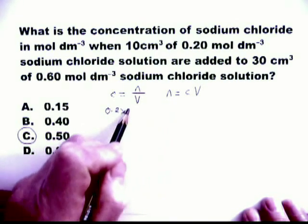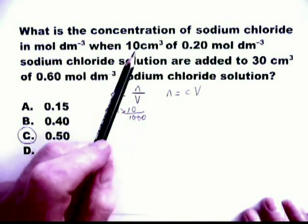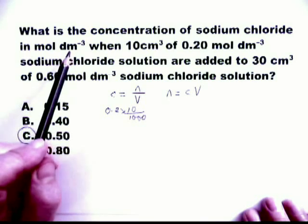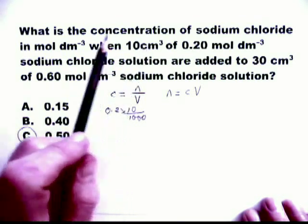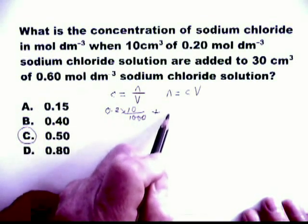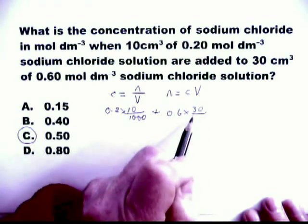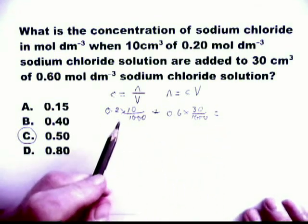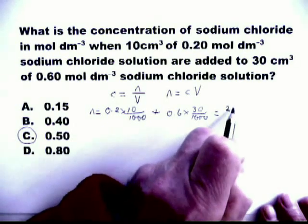0.2 times 10 over 1,000. I put the 1,000 in because the volume is measured in centimetre cubed and we want the answer in decimetres cubed. And the relationship is 1,000 to 1 plus 0.6 times 30 over 1,000. And that is N.